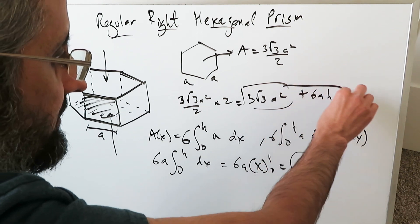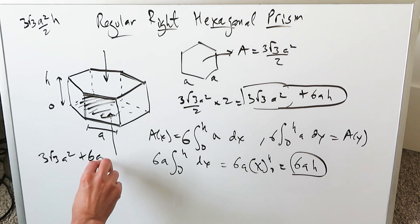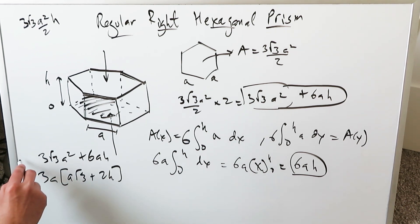This right here represents your answer in terms of the surface area. The surface area of a hexagonal prism would be 3 root 3 A square plus 6AH, or you can isolate 3A and say A times root 3 A plus 2H. Either of these answers is fine, and that's your surface area.